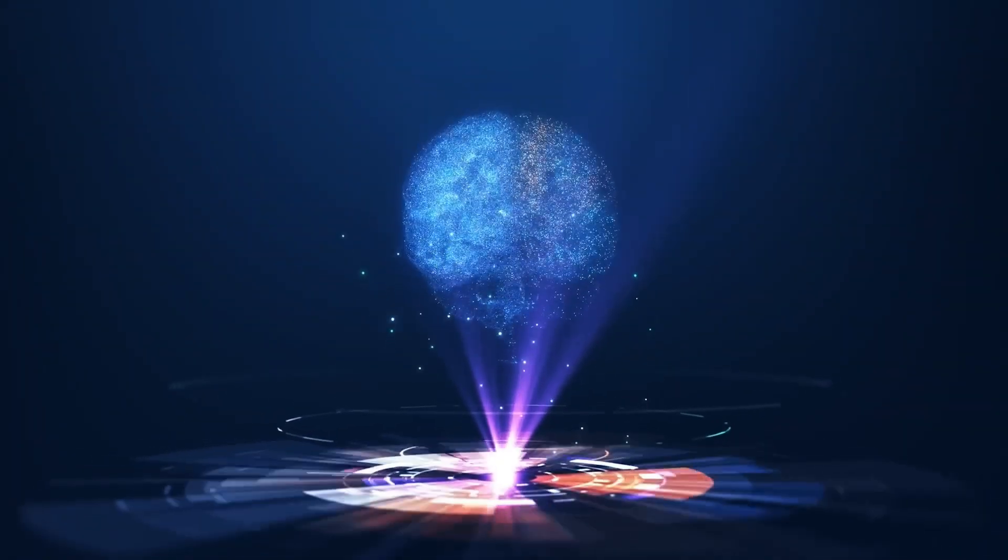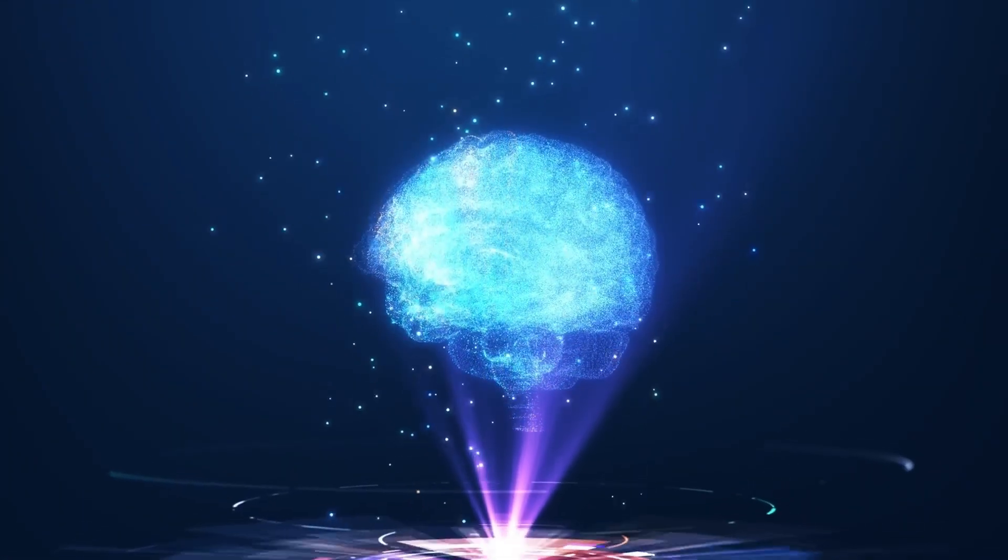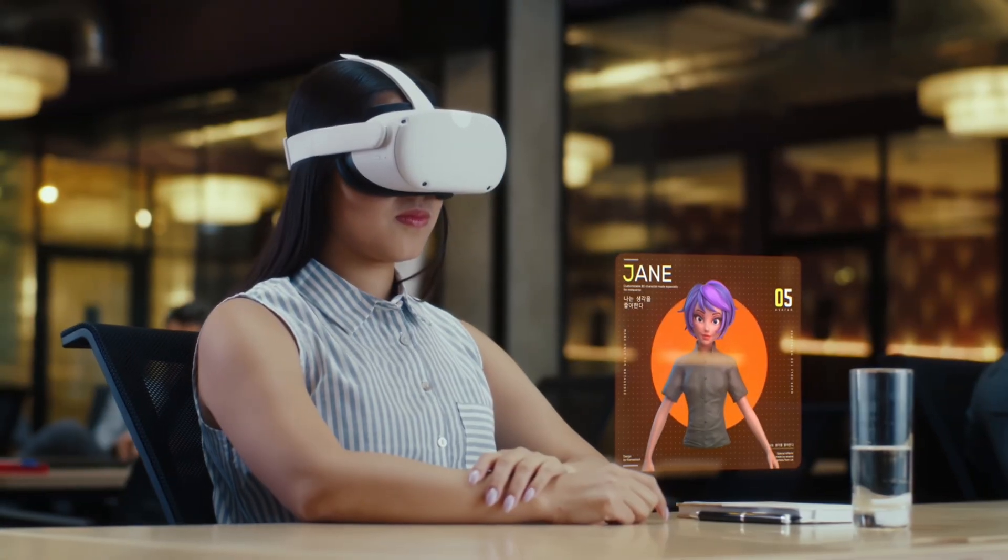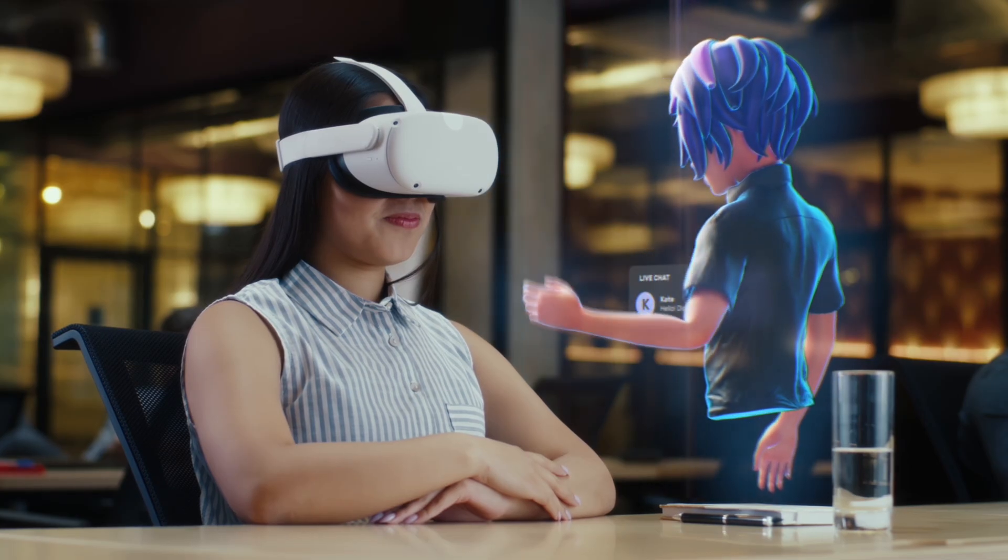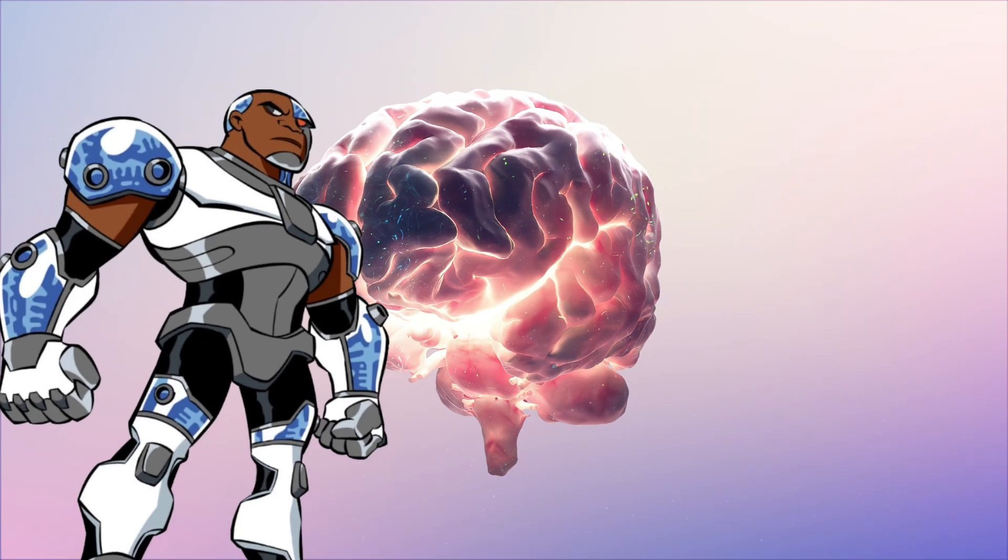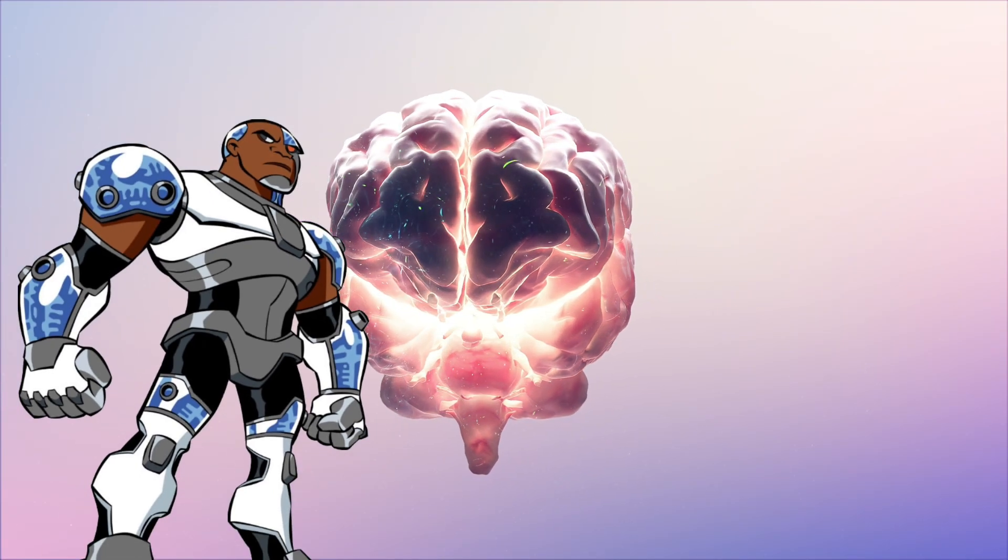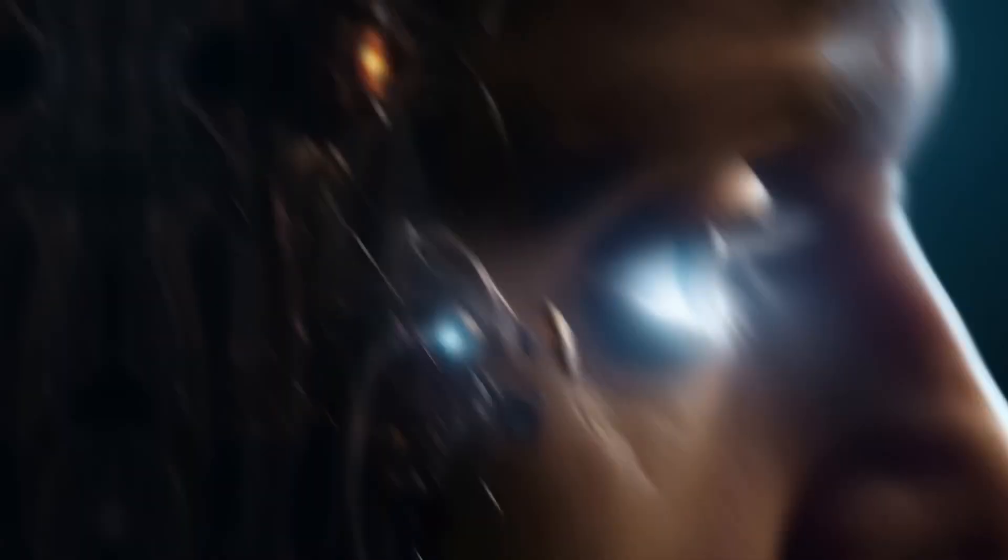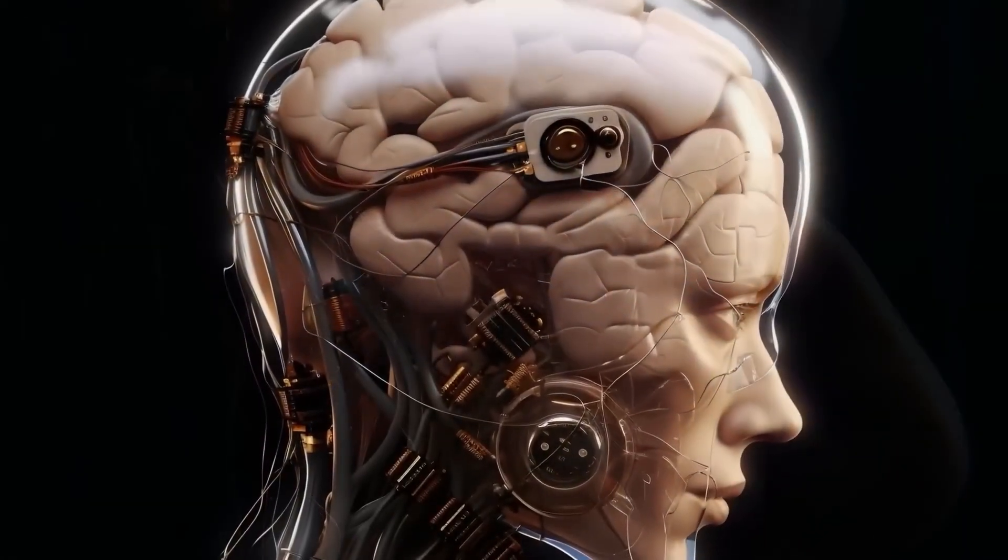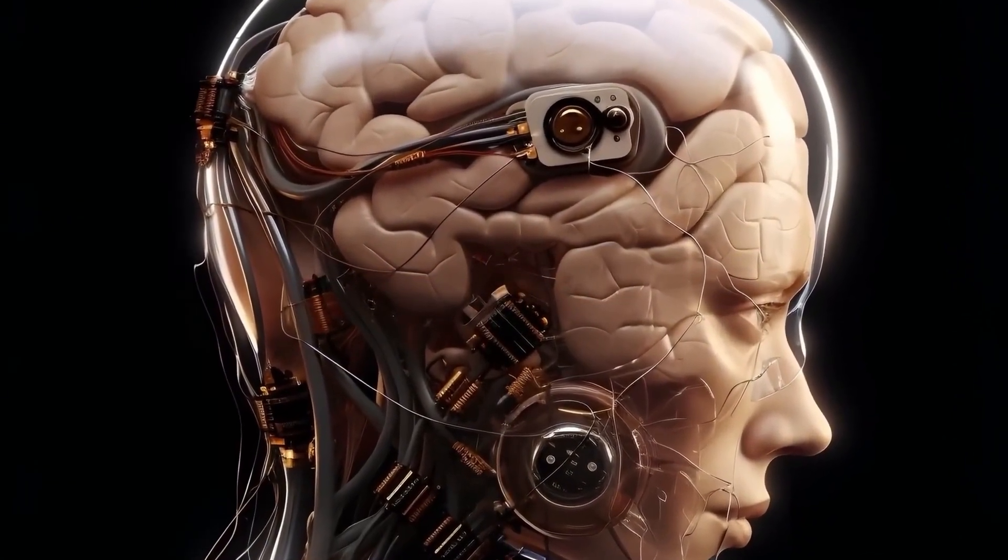They've crossed a line that a lot of people thought could never be crossed. And in doing so, they've redefined what we know about artificial intelligence. Now, before you start picturing some kind of terrifying cyborg, let me clear things up for you. They're calling this wild invention a brain on a chip. Sounds like something out of a sci-fi movie, right? Well, it kinda is.